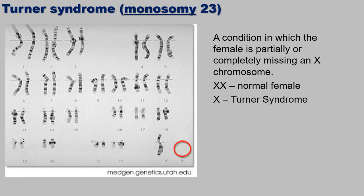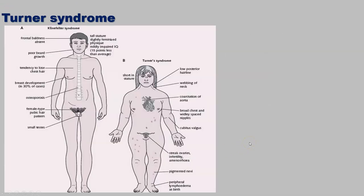Turner syndrome is monosomy 23 — there is no Y chromosome, but only one X. So this is a female with only one X chromosome; they have a partially or completely missing X chromosome. A normal female has two X chromosomes; a normal male has one X and one Y. There is no Y chromosome here — that is Turner syndrome. With Turner syndrome, you'll see shortened stature, a low posterior hairline, neck webbing, something going wrong with the aorta, broad chest, widely spaced nipples, streaked ovaries, and infertility.